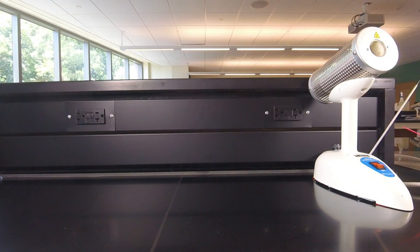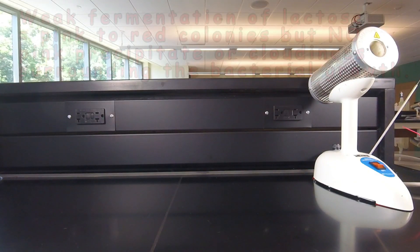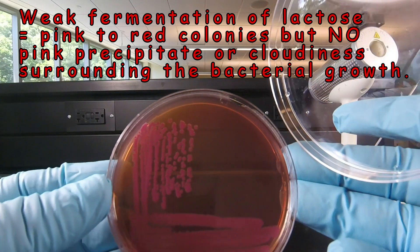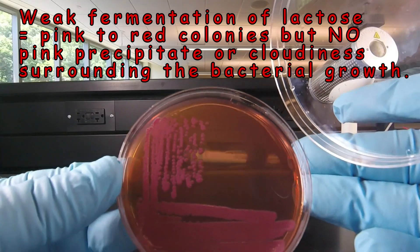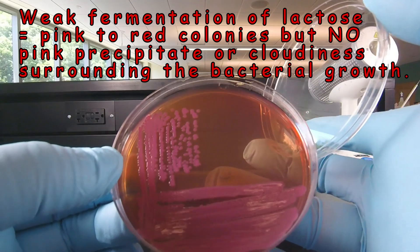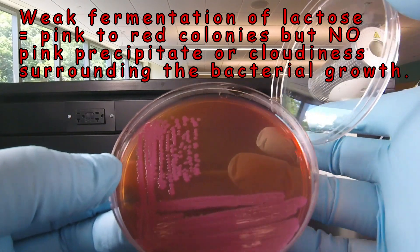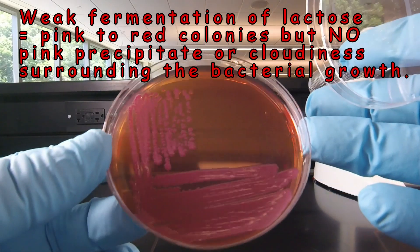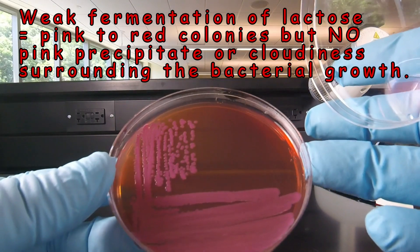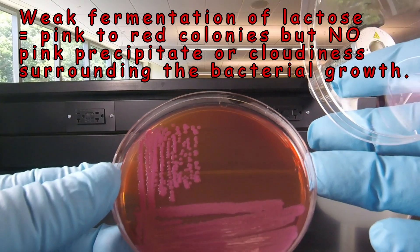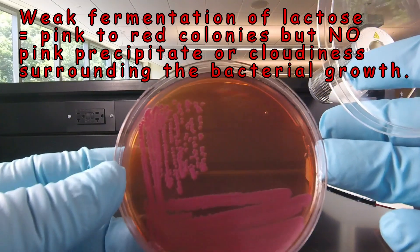If the bacterium weakly ferments lactose, there's still enough acid to cause the colonies and the growth to appear pink to red, as we see with this Enterobacter aerogenes. But notice there's no pink precipitate or cloudiness surrounding the growth. The agar looks relatively transparent surrounding the colonies. So we see pink colonies without the pink precipitation surrounding the growth. That would indicate weak fermentation.